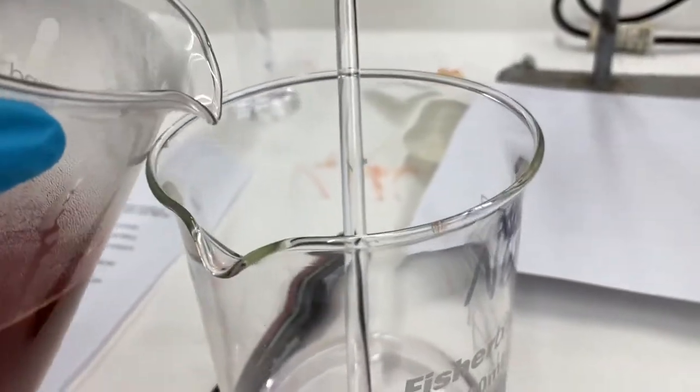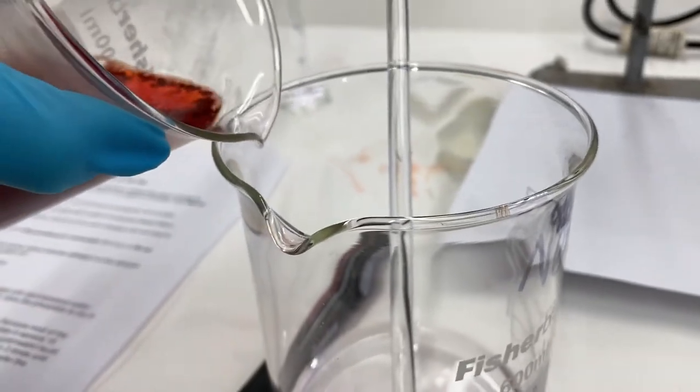Once the dye stuff solution is at the proper temperature then it's slowly added to the alkaline solution and then slowly constantly stirred with a glass rod.